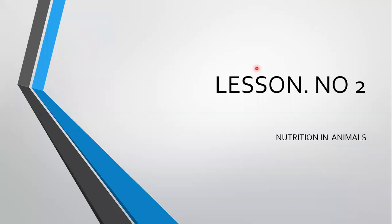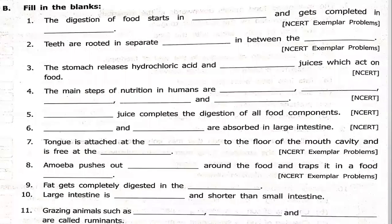Hello students, today we are going to start the revision of lesson number two, Nutrition in Animals. I will be giving the notes of this lesson. We will start with the objective questions — fill in the blanks, and I have also included some true or false. Most of the questions are taken from the textbook only. Questions marked with NCERT in brackets are from the textbook; the remaining are extra questions.